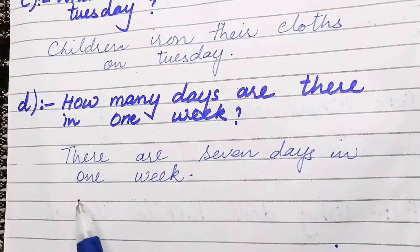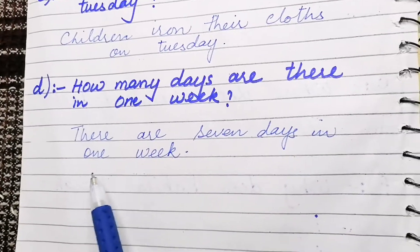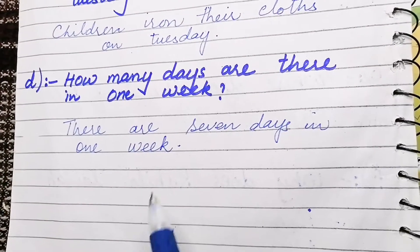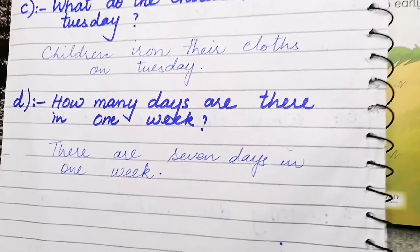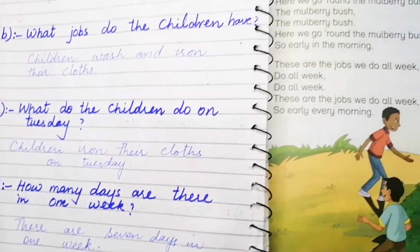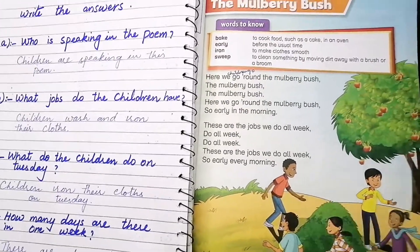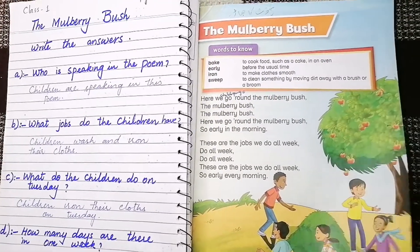Part B, question: How many days are there in one week? There are seven days in one week. So this was the solved exercise with question answers. Let's do the next chapter.